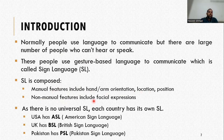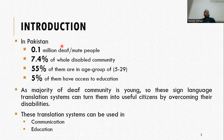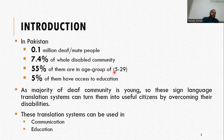Several countries have developed their own sign language since there is no universal sign language. For instance, USA has American Sign Language, UK has British Sign Language, and Pakistan has Pakistan Sign Language. Some stats from Pakistan: 0.1 million people are deaf or mute, which is 7.4% of the whole disabled community, and 55% of them are within the age group of 5 to 29 years, and only 5% of them have access to education.